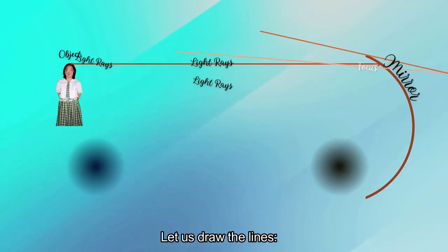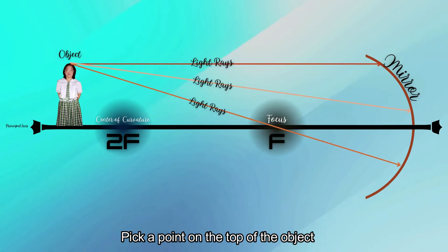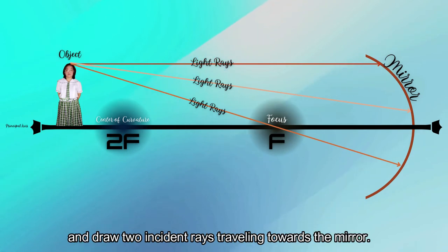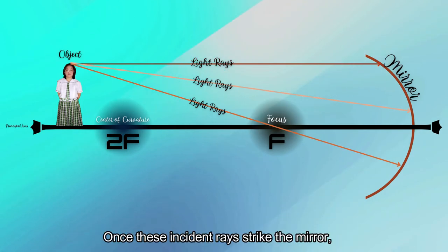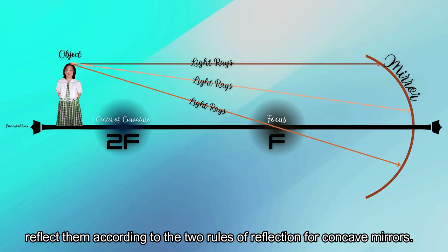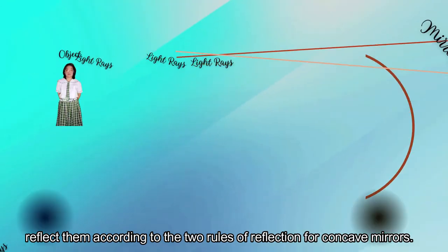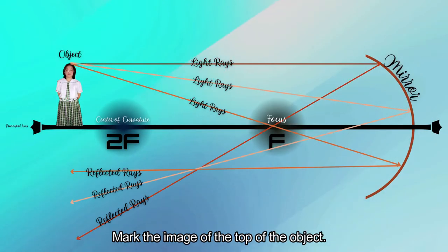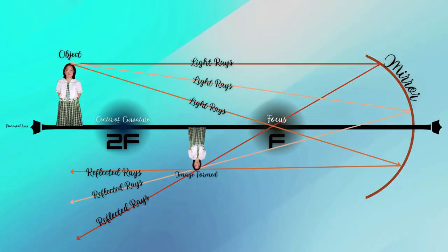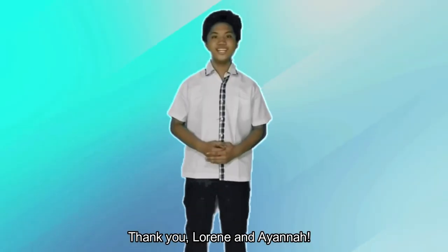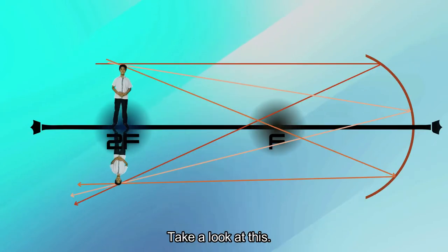Let us draw the lines. Pick a point on top of the object and draw two incident rays traveling toward the mirror. Once these incident rays strike the mirror, reflect them according to the two rules of reflection for concave mirrors. Then mark the image of the top of the object. Thank you Lorena and Ayana. Now let's go back to the location. I am now standing at the center of curvature, applying the diagram. Observe the lines and where my image will be formed.